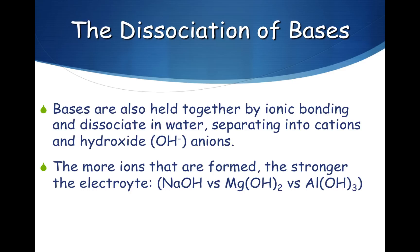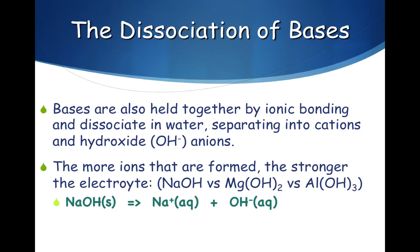Let's consider the dissociation of sodium hydroxide, magnesium hydroxide, and aluminum hydroxide. When sodium hydroxide dissociates in water, it produces one sodium ion and one hydroxide ion. It's important to notice that the oxygen and hydrogen do not separate in the hydroxide ion — that's because the oxygen and hydrogen are held together by covalent bonding.